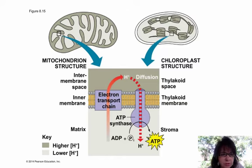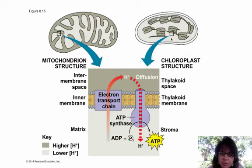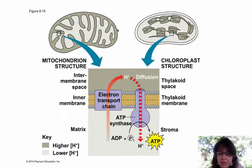We have the inner membranes of the mitochondria where all of those complexes are embedded. Very similarly, we have the inner membranes of the chloroplast where the electron transport chain is embedded. This light gray color is showing you where the hydrogens build up: in the mitochondria it's the inner membrane space, and in the chloroplast it's the interior of the thylakoids. If you had a chemical that punctured those membranes and let the hydrogen ions leak out, you wouldn't be able to make your ATP.